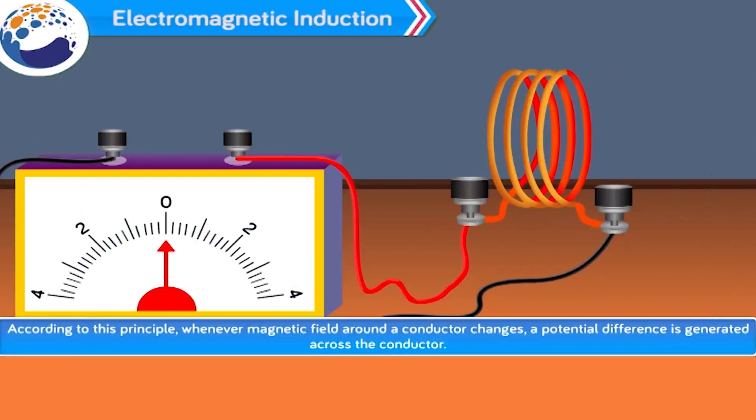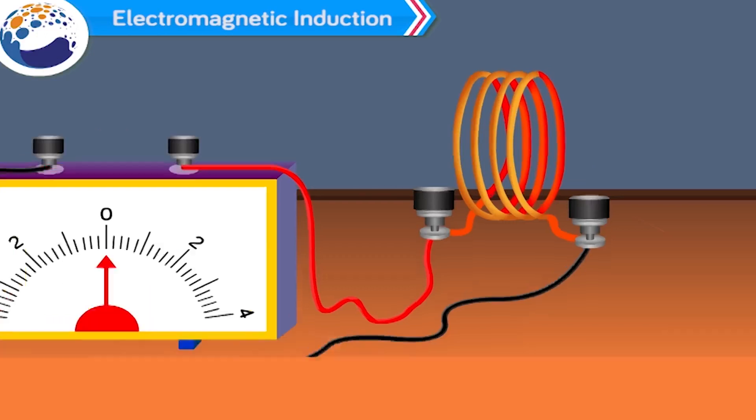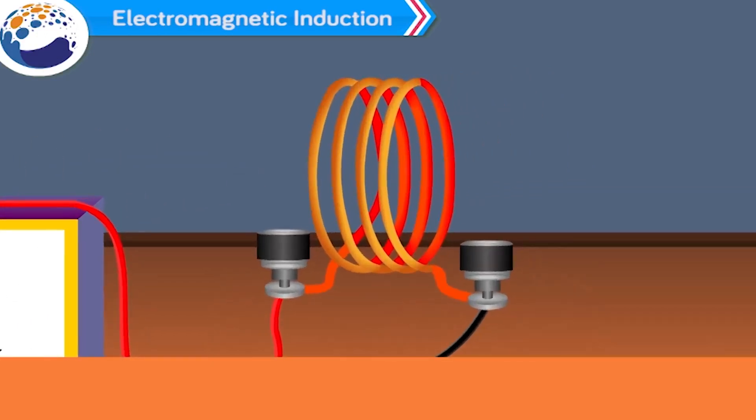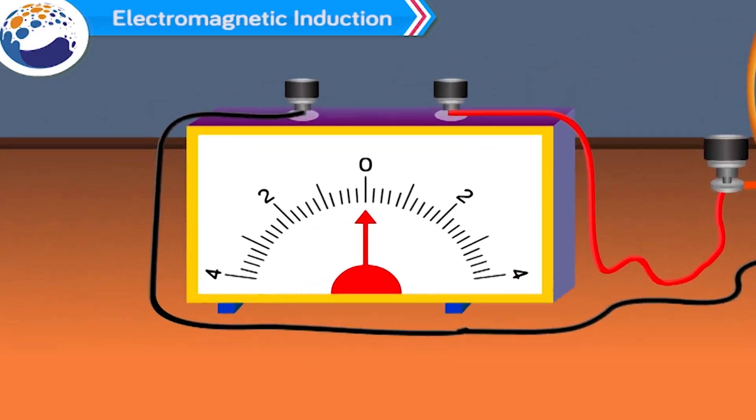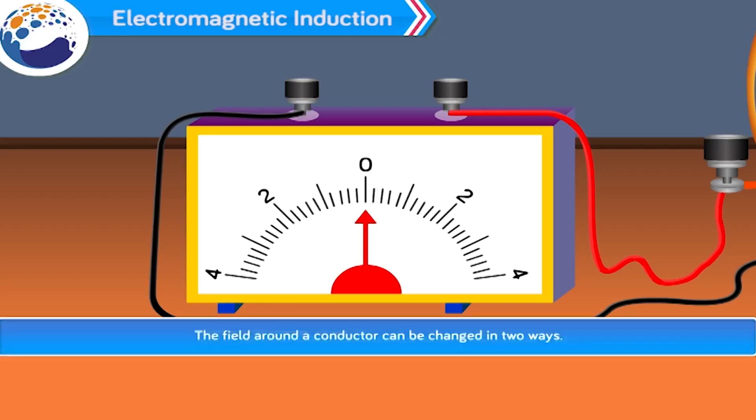The coil of DC motor continues to rotate in the same direction. According to this principle, whenever magnetic field around a conductor changes, a potential difference is generated across the conductor. Let us understand this. Take a circular coil and connect two ends of this coil to galvanometer to measure potential difference. This circuit has no source of electricity and the galvanometer initially shows zero reading. The field around the coil can be changed in two ways.